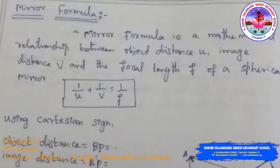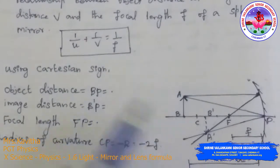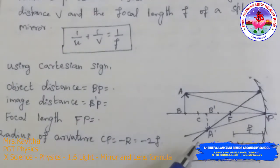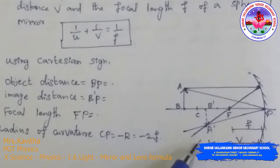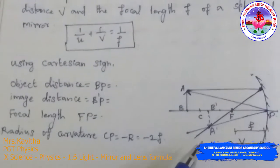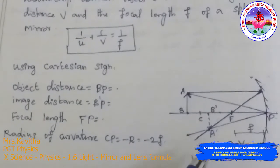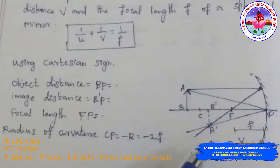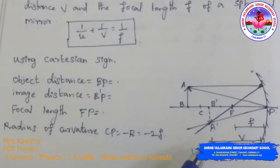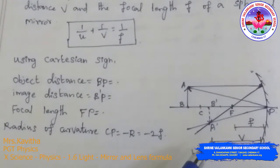Through the diagram I can explain this formula, which is applicable to all concave and convex mirrors whether the image formed is real or virtual. Before we explain this, the assumptions for the derivation are: all rays are paraxial, the aperture should be very small, and the object placed on the principal axis should be very small in size.